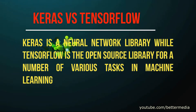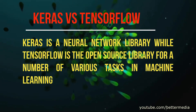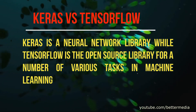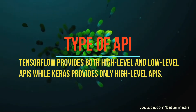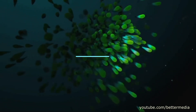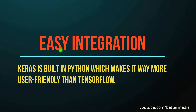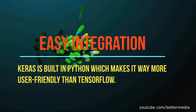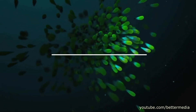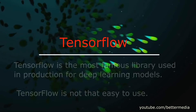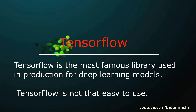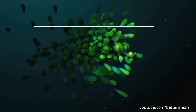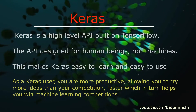Keras is a neural network library, while TensorFlow is an open-source library for a number of various tasks in machine learning. TensorFlow provides both high-level and low-level APIs, while Keras provides only high-level APIs. Keras is built in Python, which makes it way more user-friendly than TensorFlow. TensorFlow is the most famous library used in production for deep learning models. However, TensorFlow is not that easy to use.